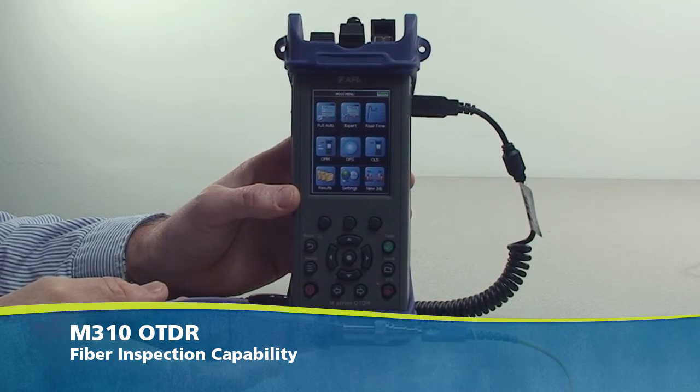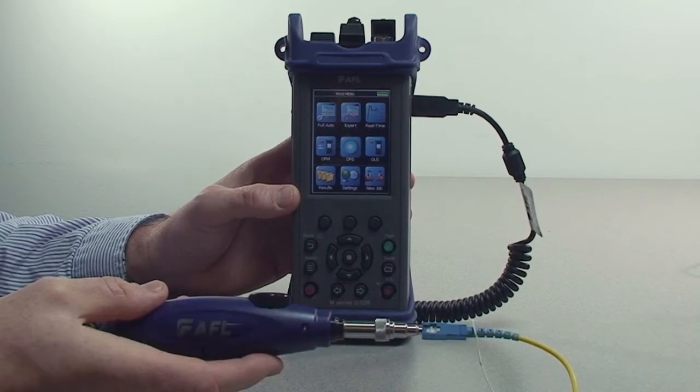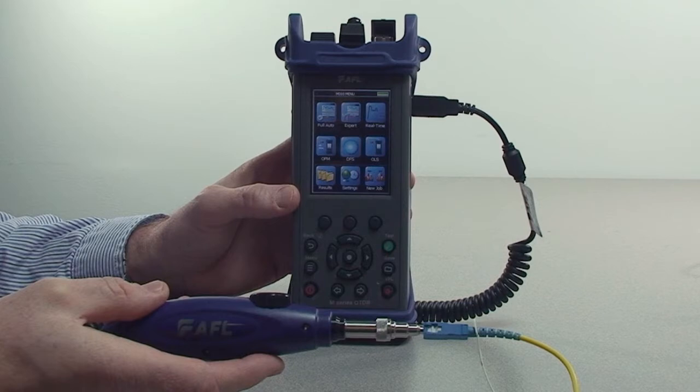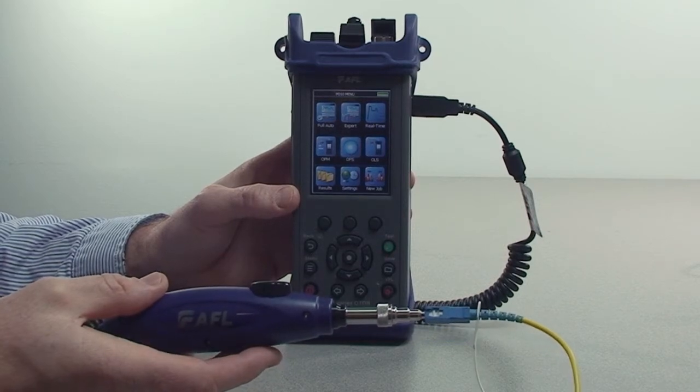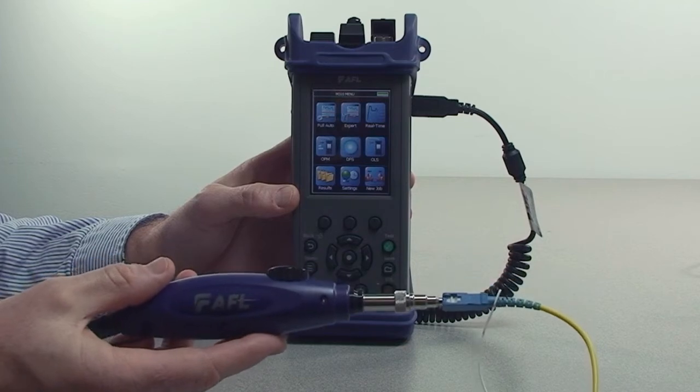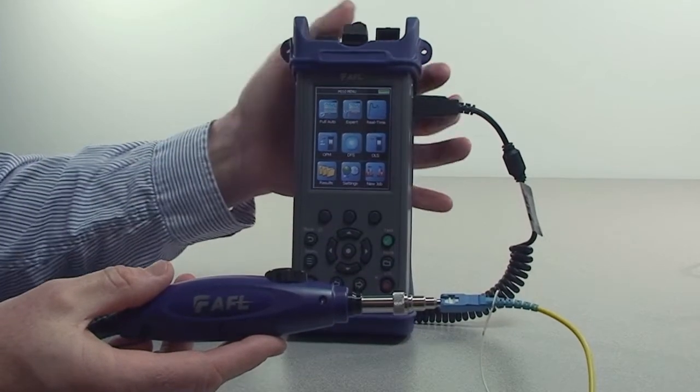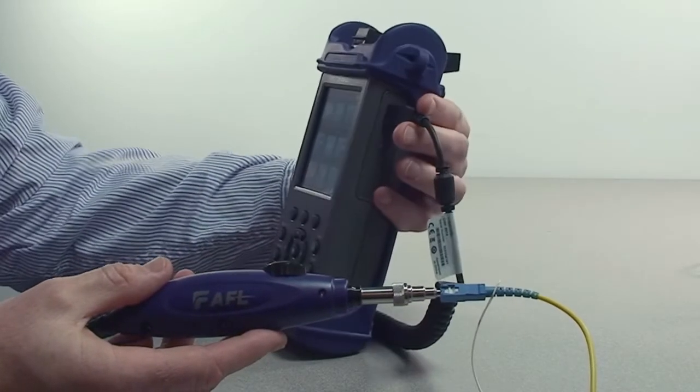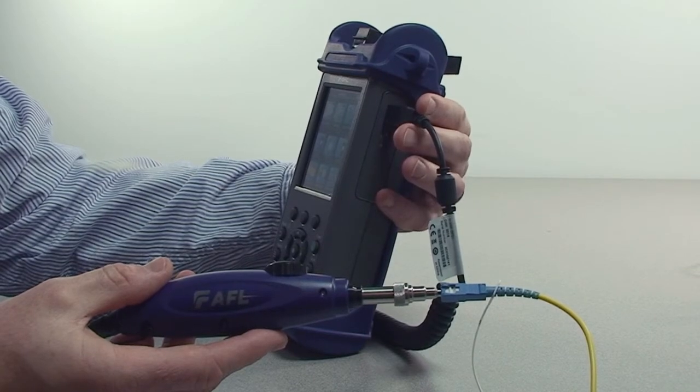In this video, we're going to introduce the M-Series OTDR fiber inspection capability. If you purchased the M-Series OTDR with AFL's Digital Fiber Inspection scope, you simply plug the scope into the full-size USB on the side of the device.